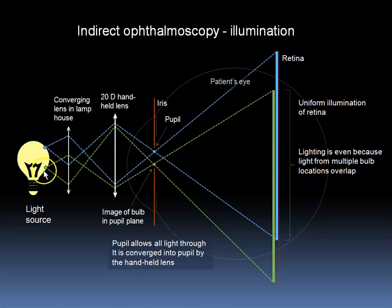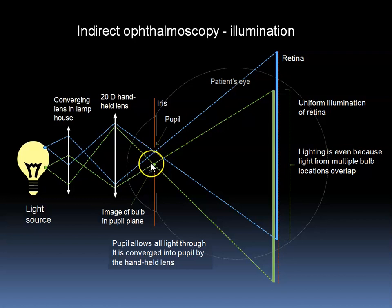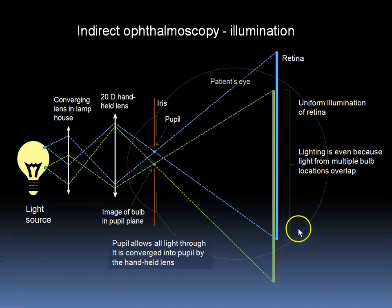Here we see two different points on the surface of the bulb. The object points have corresponding image points in the pupil plane, so that we can say that there is an image formed in the pupil. When the image points then diverge to give off light to illuminate the retina, we have large overlapping areas of illumination from the different points on the bulb. The illumination is even because the light from multiple bulb locations overlap.